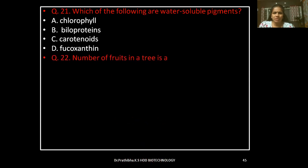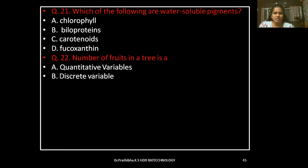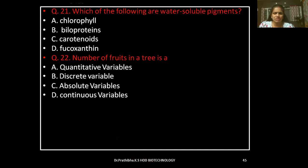Question 22: Number of fruits in a tree is — quantitative variable, discrete variable, absolute variable, or continuous variable.